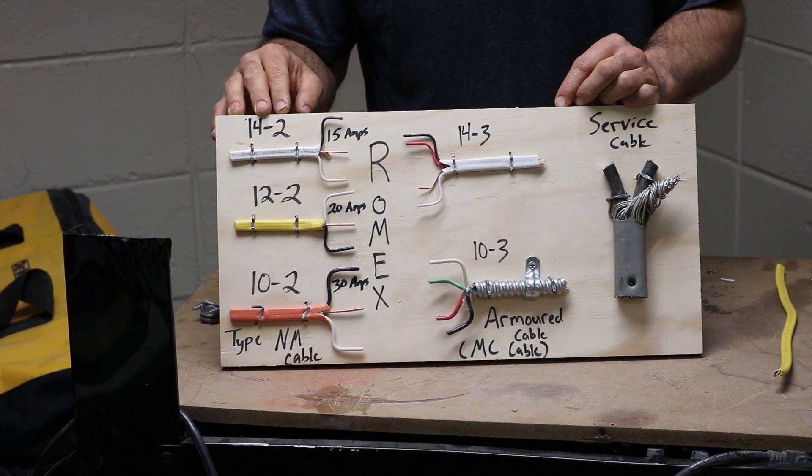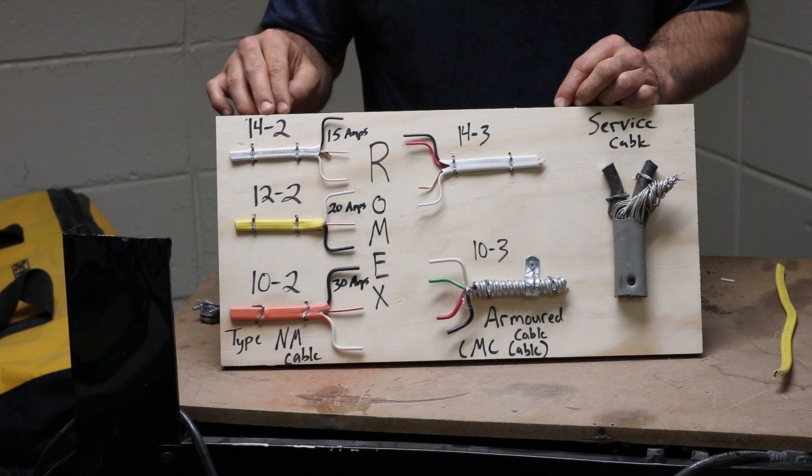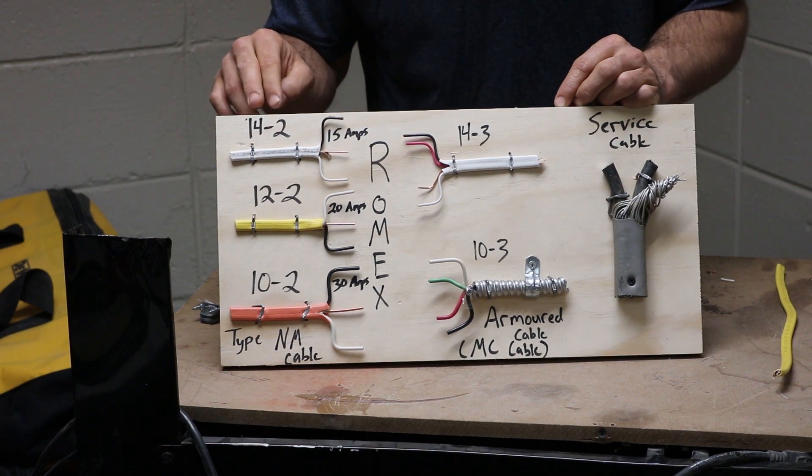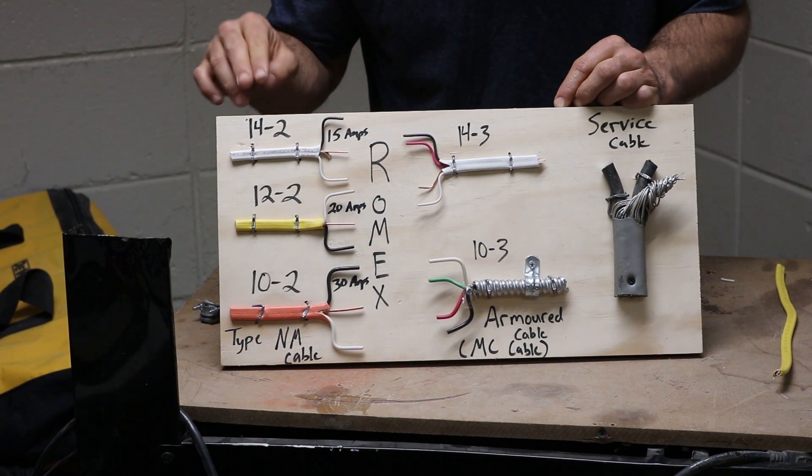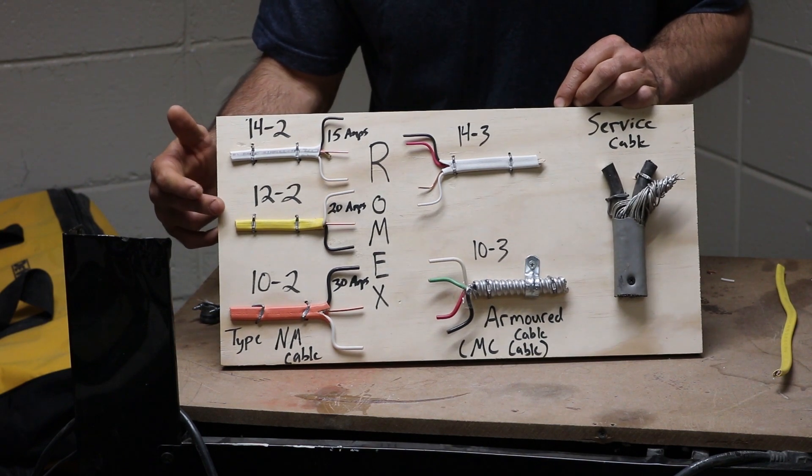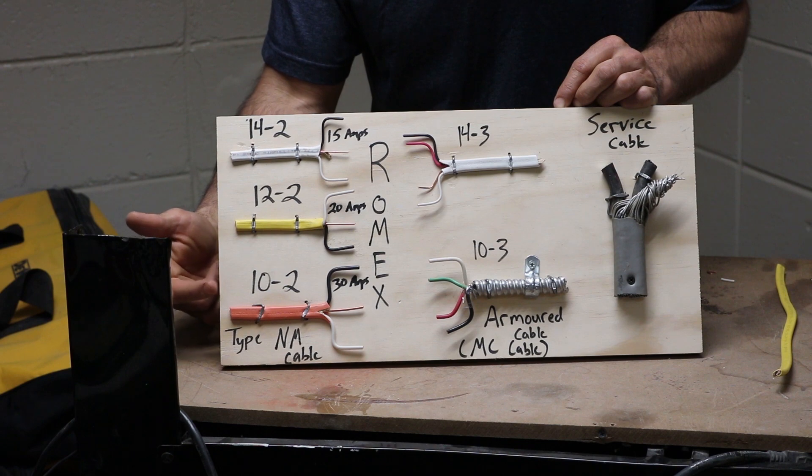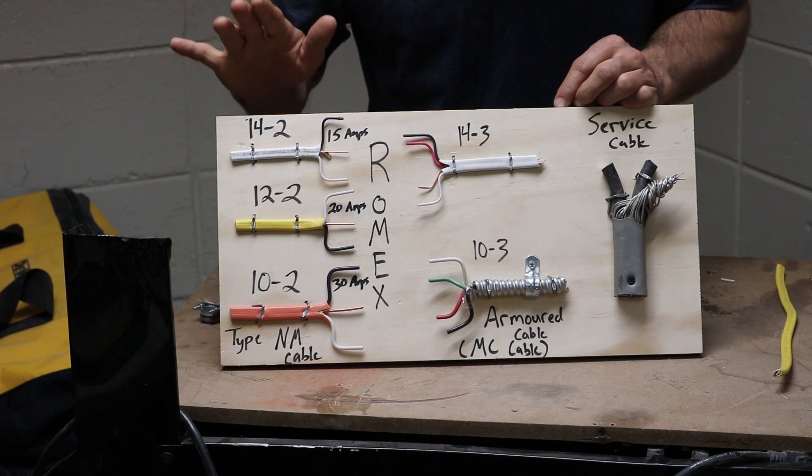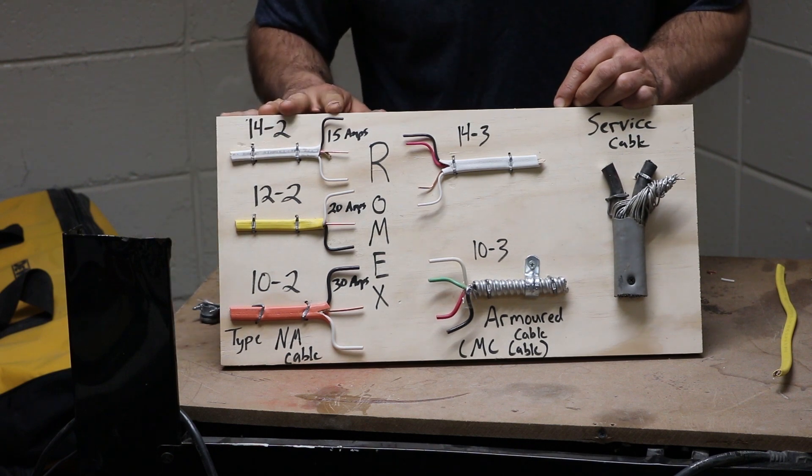14 is going to be one of the smallest wires that you can run through a house. The larger the number, the smaller the wire. So 14 gauge wire is smaller than 12, and 12 gauge wire is smaller than 10.